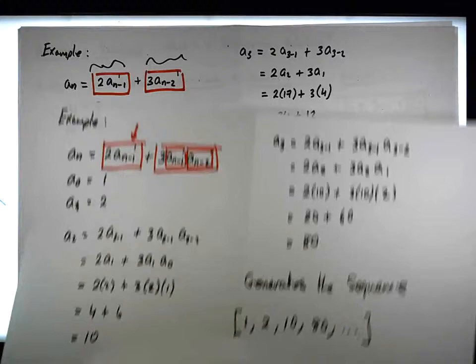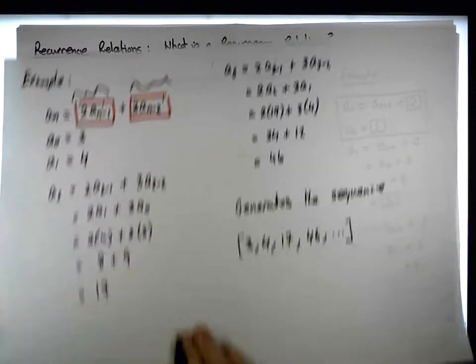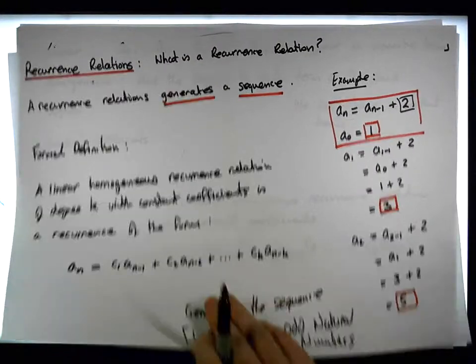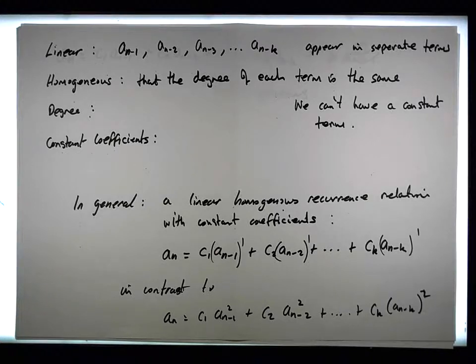Just moving ahead there, let's go back to what we had. What else do we need to define? We need to also define the degree, the degree of a recurrence relation. Well, the degree is basically defined to be, it defines, it's how many previous terms are included, or probably more importantly...